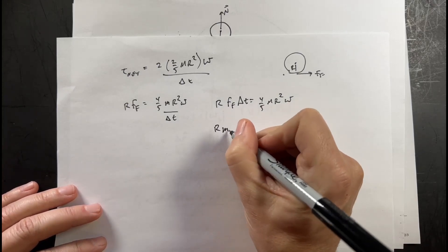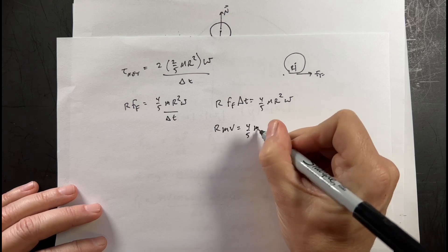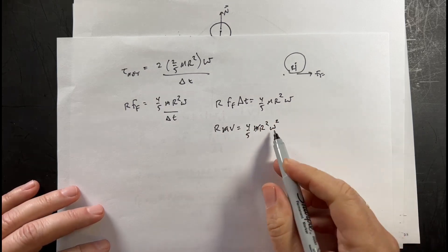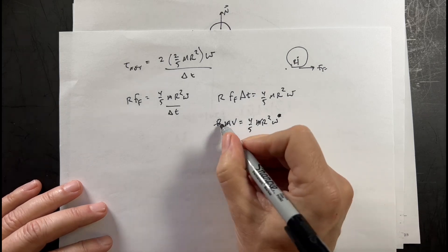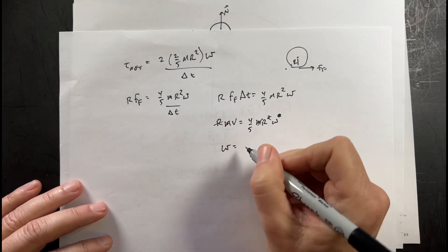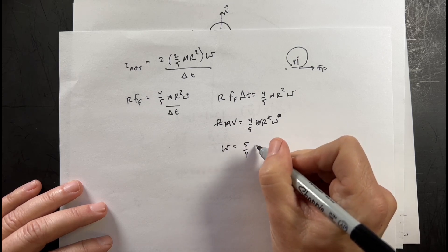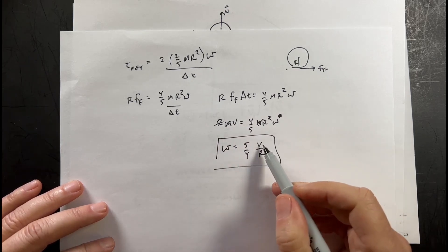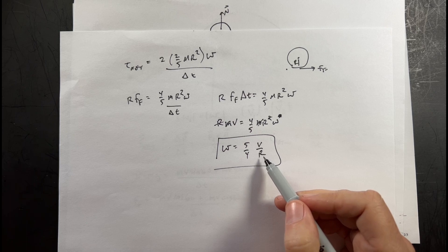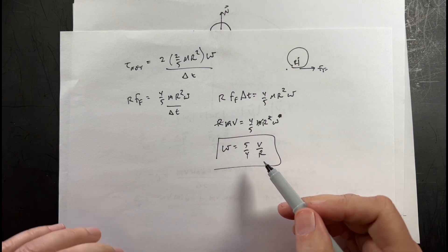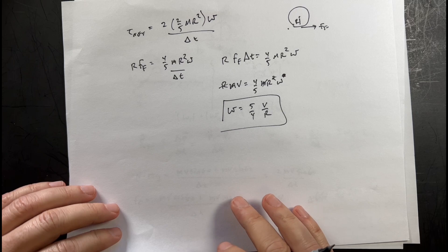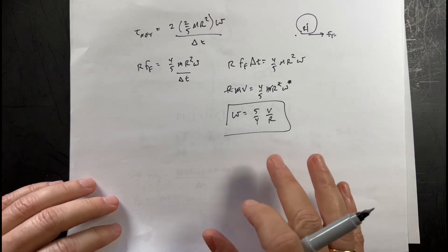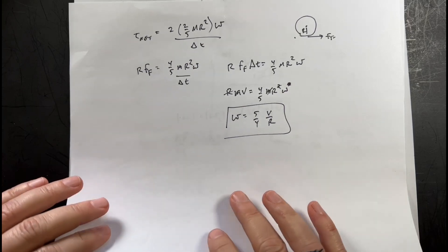Going back to the x-direction result, ff·Δt = mv. Substituting into r·ff·Δt = (4/5)·mR²·ω, I get r·mv = (4/5)·mR²·ω. The masses cancel, one factor of R cancels, and I get omega = (5/4)·v/R. That has the right units — meters per second divided by meters gives one over seconds. I feel like that could be right, but it's just not gelling in my head.